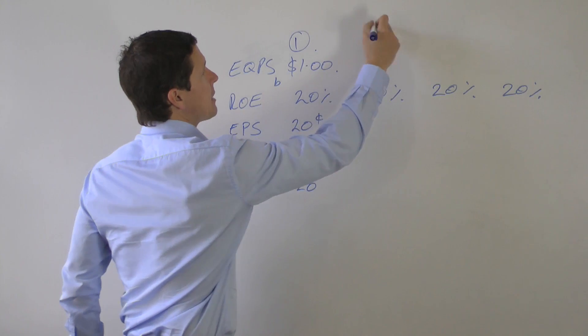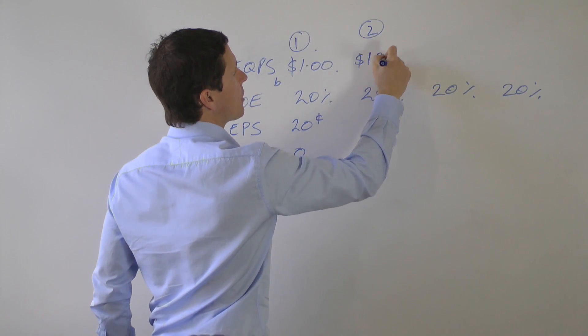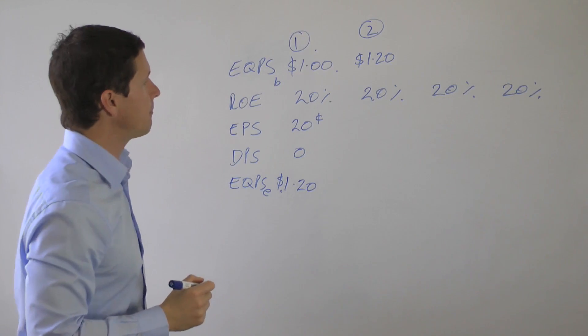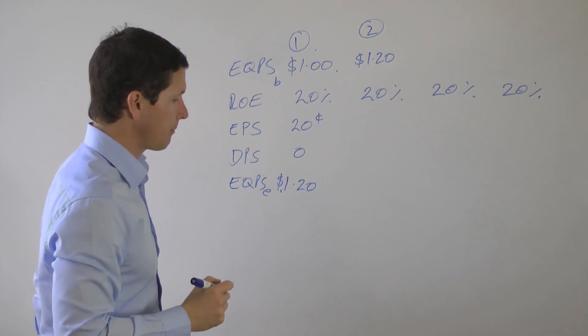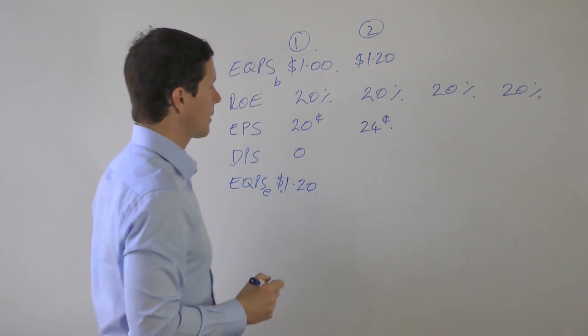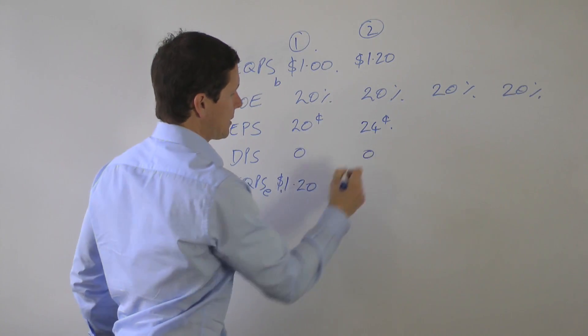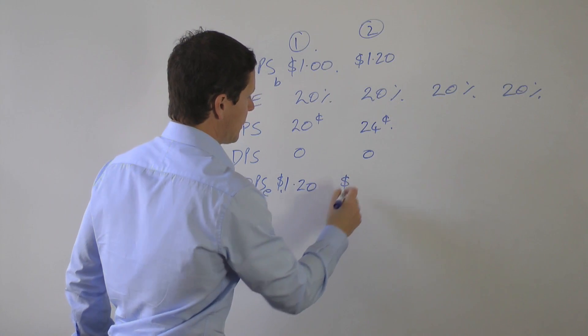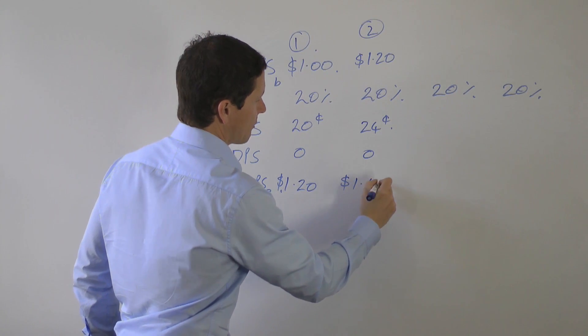In the second year, the company starts the year with $1.20 of equity, earns 20 percent again which is 24 cents. The company pays no dividends and so at the end of the year it has equity of $1.44.